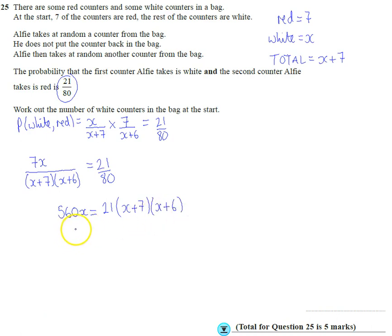So we get 560X here. Then we're going to get 21 times, and let's expand this bracket, these double brackets. But remember they're all multiplied by 21 so I'll do that in a second.